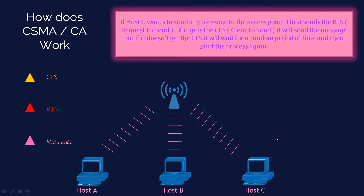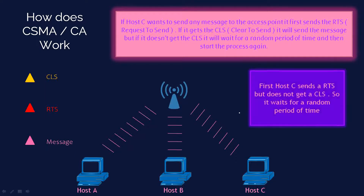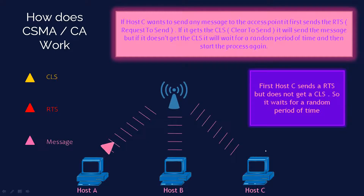Now, host C wants to send a message to the access point, so it sends an RTS to the access point. However, it does not get the CTS because host A is already sending messages to the access point. Since host C did not get the CTS, it waits for a random period of time.